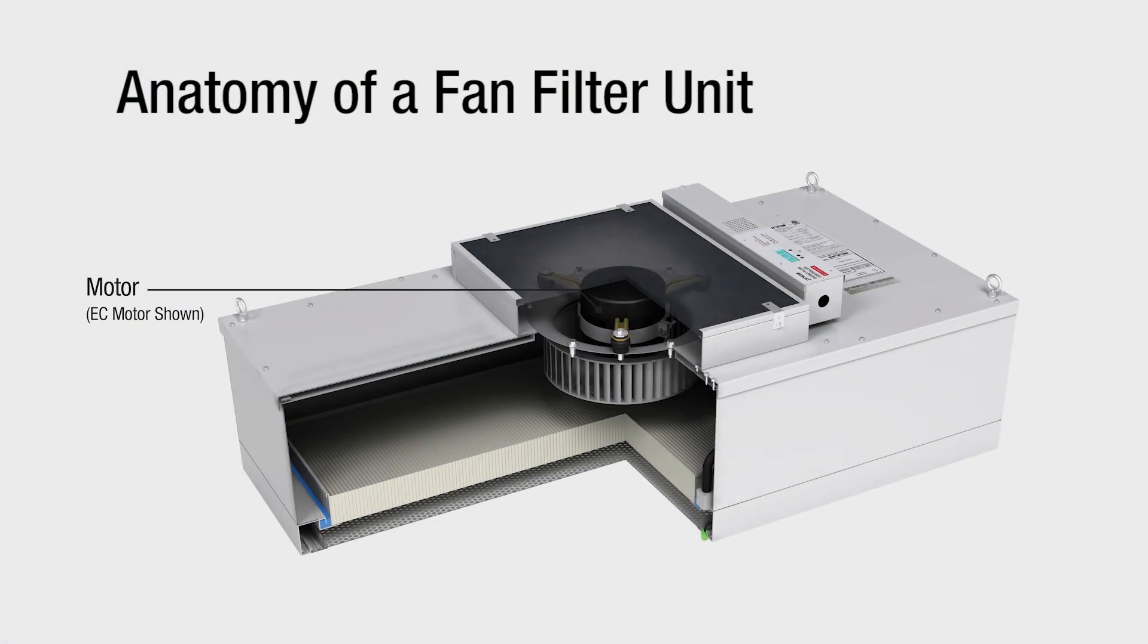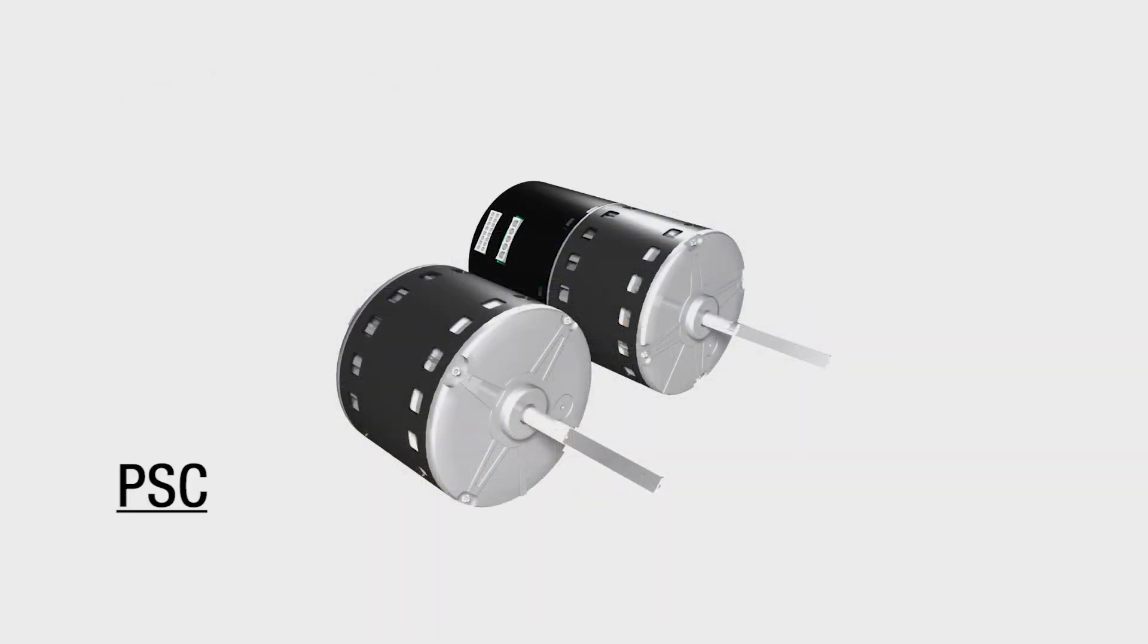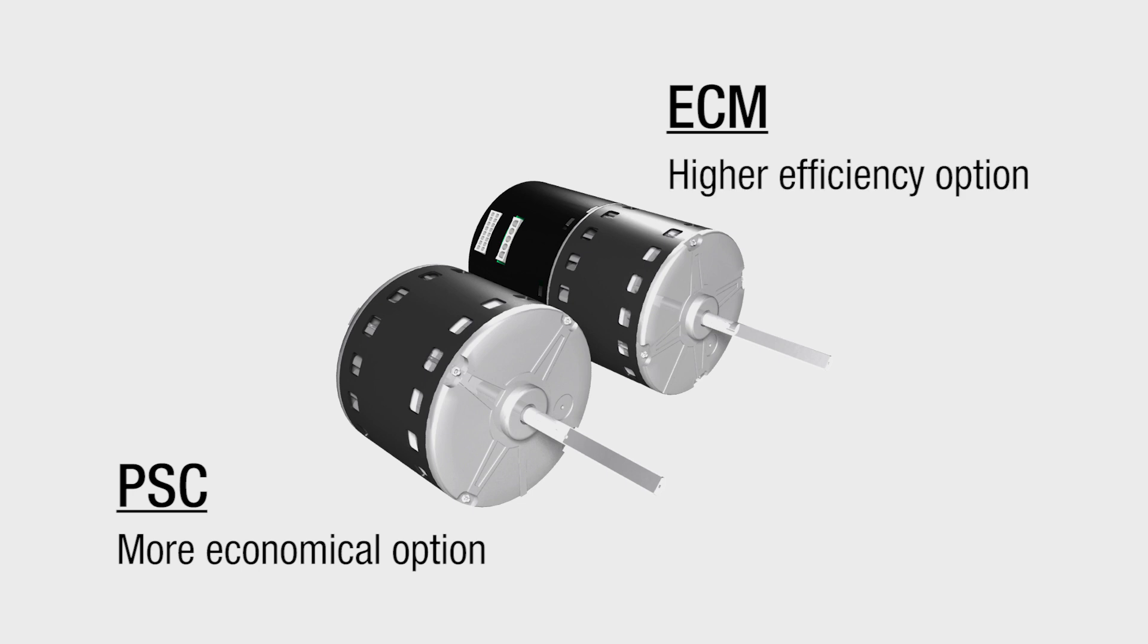Another option to look at when selecting a fan filter unit is the type of motor used. PSC or AC induction type motors are the more economical option. ECM or brushless DC motors are the higher efficiency option with onboard microprocessors that optimize motor performance and allow for motor programming.